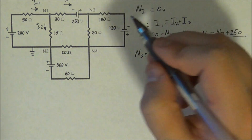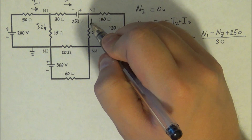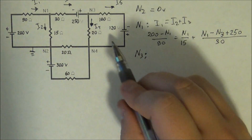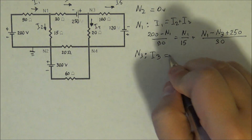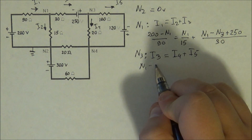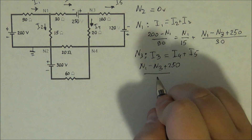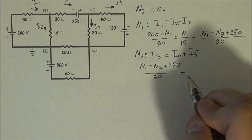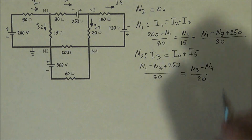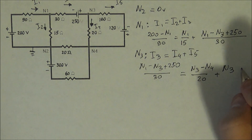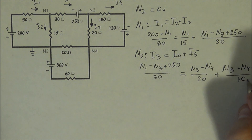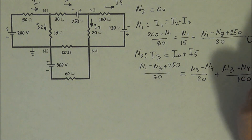At N3, we have I3 coming in and it equals I4 plus I5. I3 is the same expression: (N1 minus N3 plus 250) divided by 30 ohms. I4 is (N3 minus N4) divided by 20. And I5 is (N3 minus N4 plus 120) divided by 100. So N2 is 0.